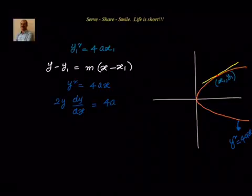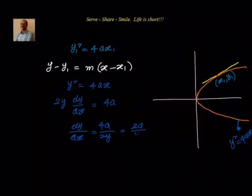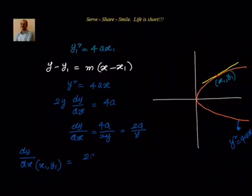So dy by dx equals 4a divided by 2y, which is equal to 2a divided by y. And the slope at the particular point x1, y1 is given by 2a divided by y1. So we now know the slope m.